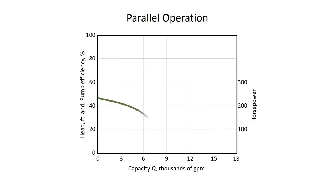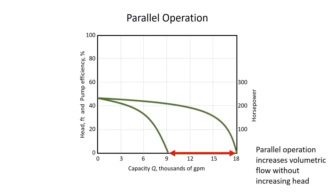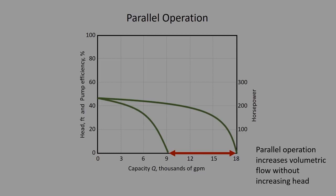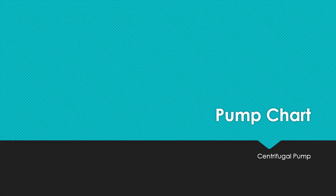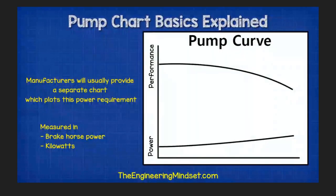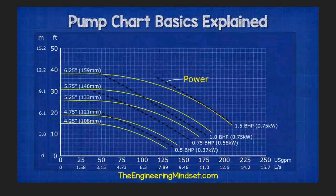In parallel operation, if we have one pump with its curve displayed and we add a second identical pump, what we see with parallel operation is an increase in the volumetric flow rate.